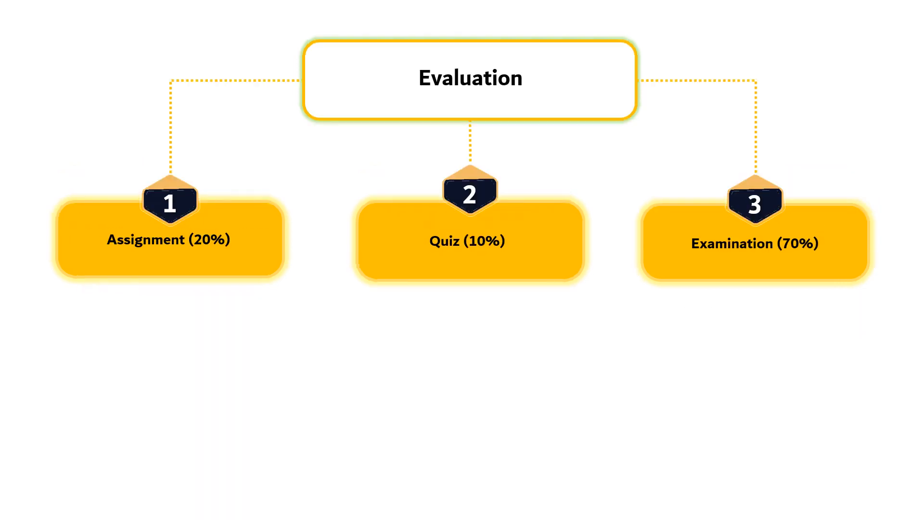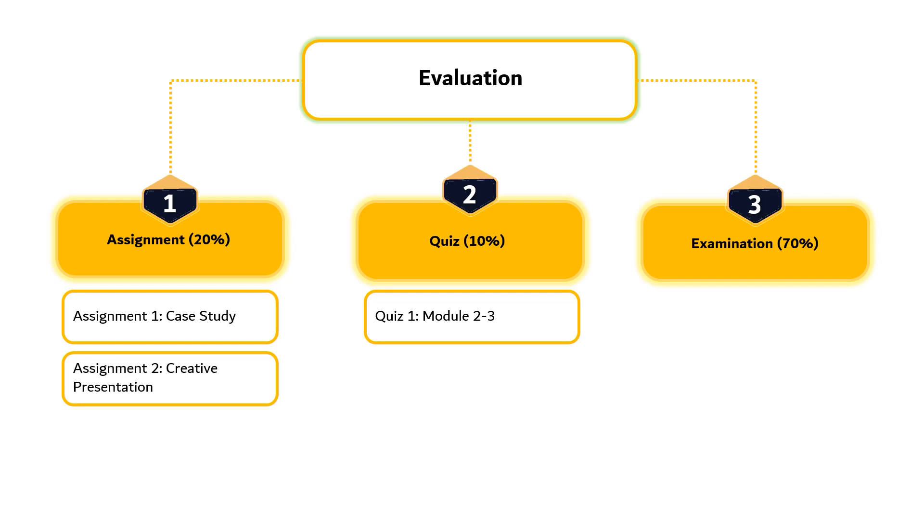Evaluation methods used in this course include Assignments, Quizzes and Examinations. There are two assignments which contribute 20% to the final score. The first is Case Study and the second one is Creative Presentation which will be discussed in detail in the next slide. There are four quizzes that contribute 10% to the final score. The first quiz covers the topic from Module 2 to 3. The second quiz includes the topic from Module 4 to 6. The third quiz covers the topic from Module 9 to 10. Whereas the fourth quiz includes the topic from Module 11 to 13.